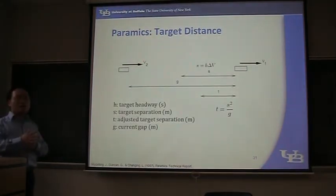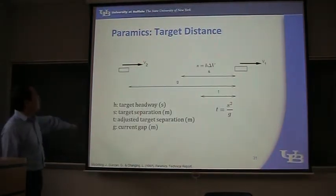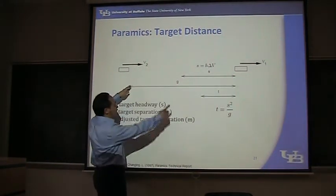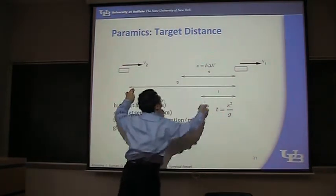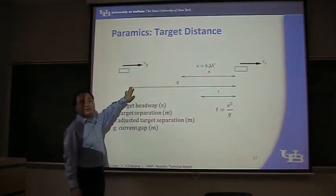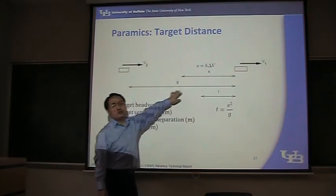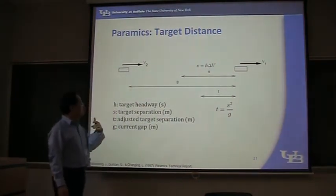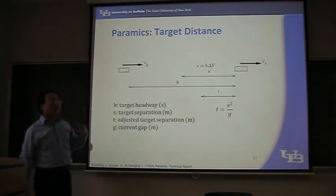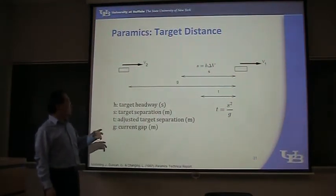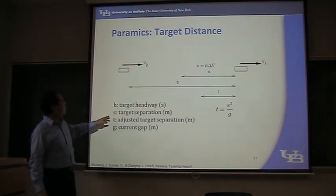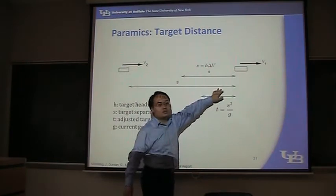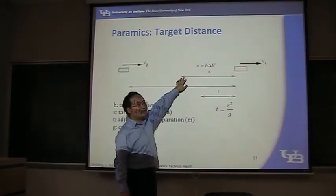After calculating the target headway, we have this diagram. This is the following vehicle, this is the leading vehicle, and they have a current gap G. It has a target headway — the target headway is in seconds — so if you multiply it by their speed difference, we get a target separation in meters. So finally, we want to get this target separation.